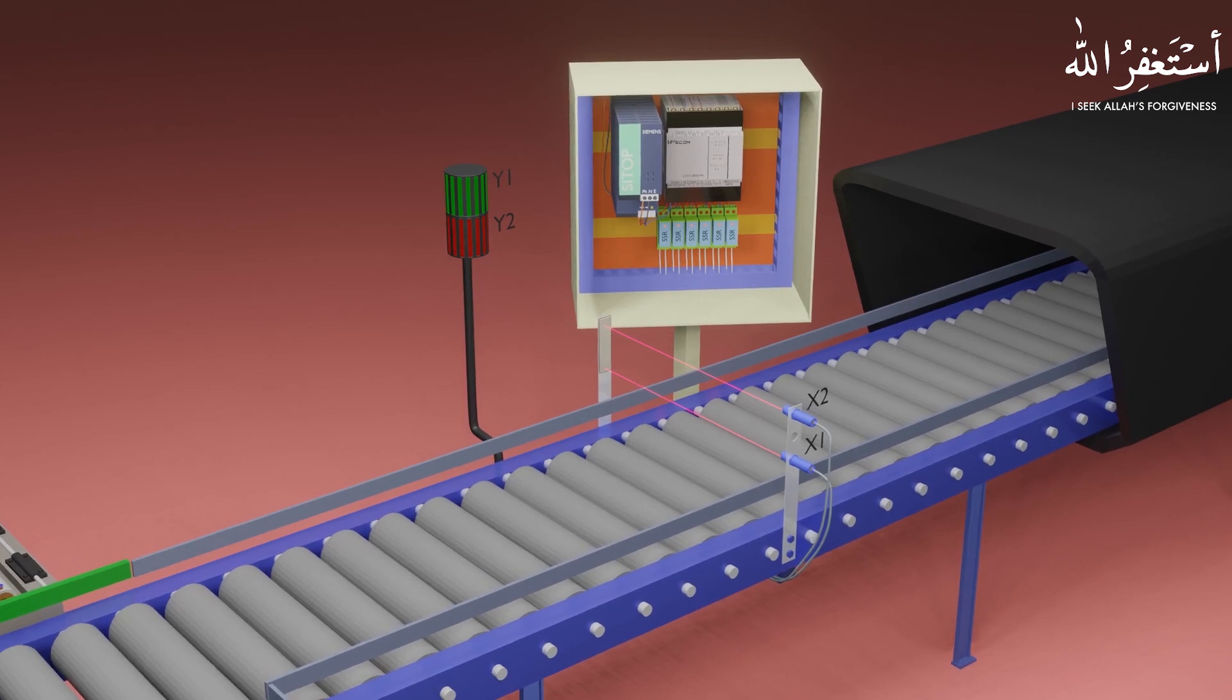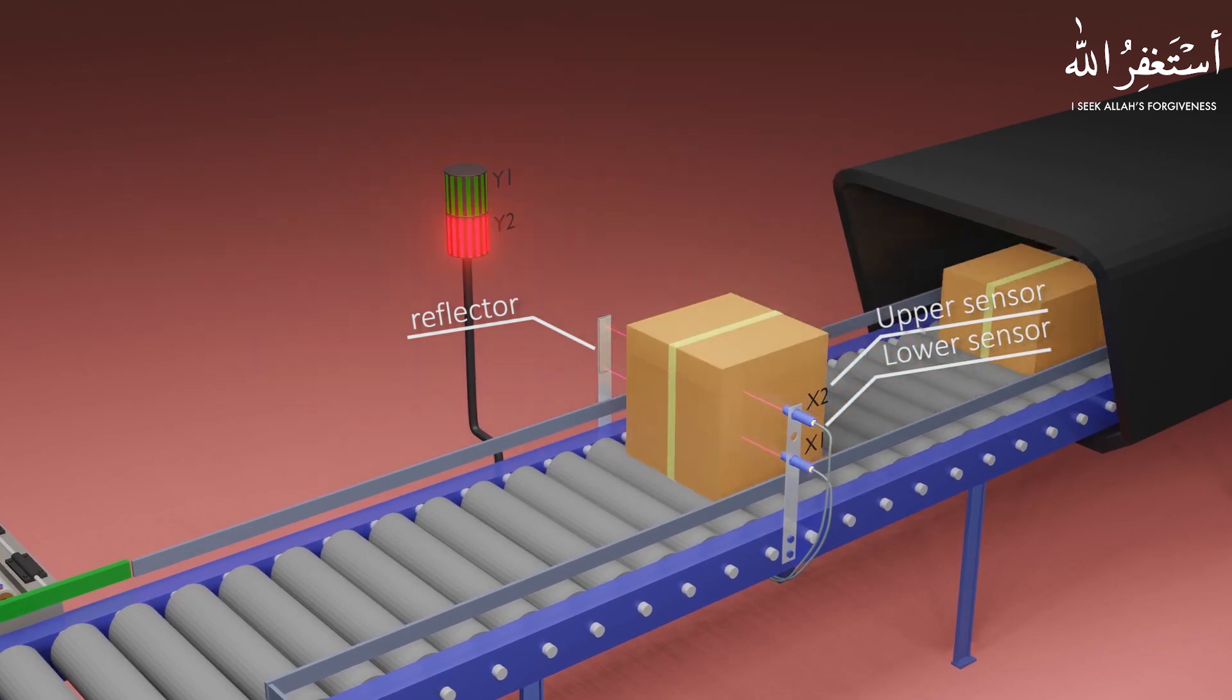To detect the difference in the height of the boxes, we have installed two beam photosensors on one side of the conveyor, and on the opposite side we have installed the reflector to detect the beam of these sensors. When an object comes in between the sensor and the reflector, it will cut the beam of the sensor, and the sensor gives an output signal at the PLC inputs X1 and X2. These sensors are connected at X1 and X2 PLC inputs.